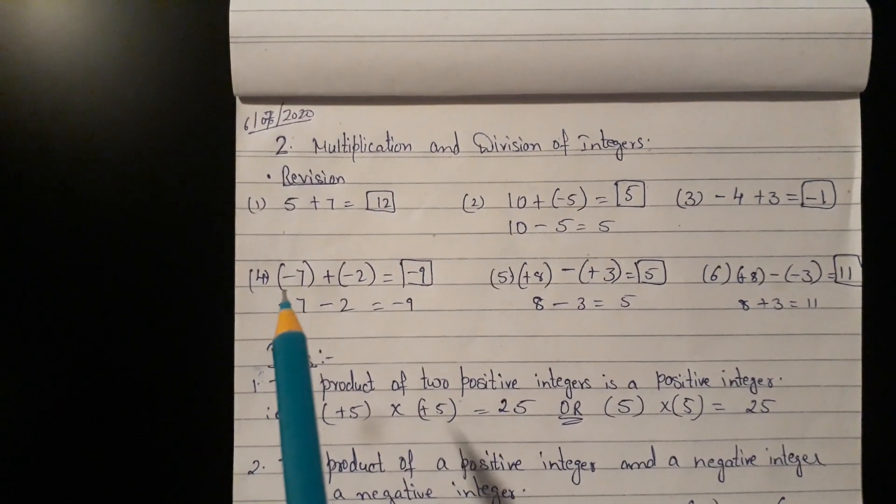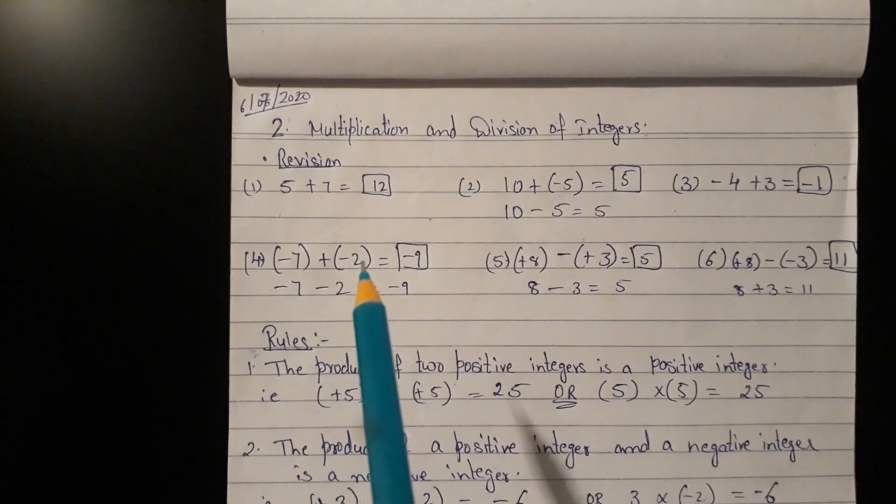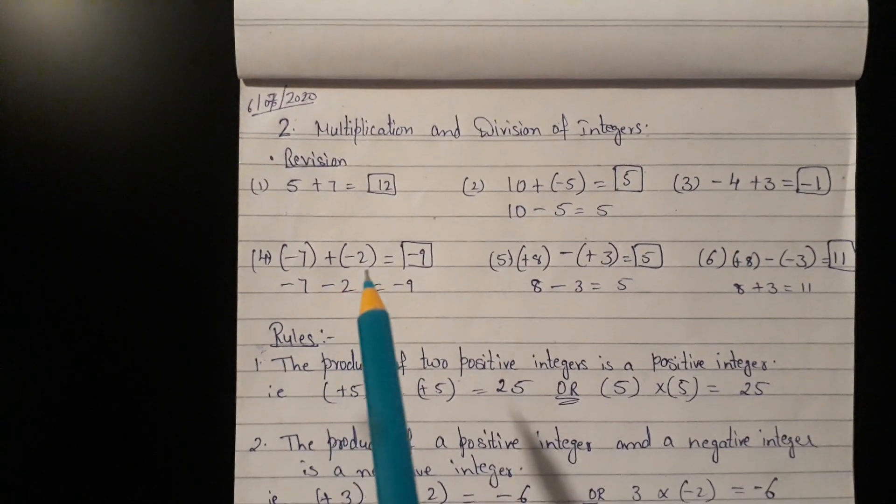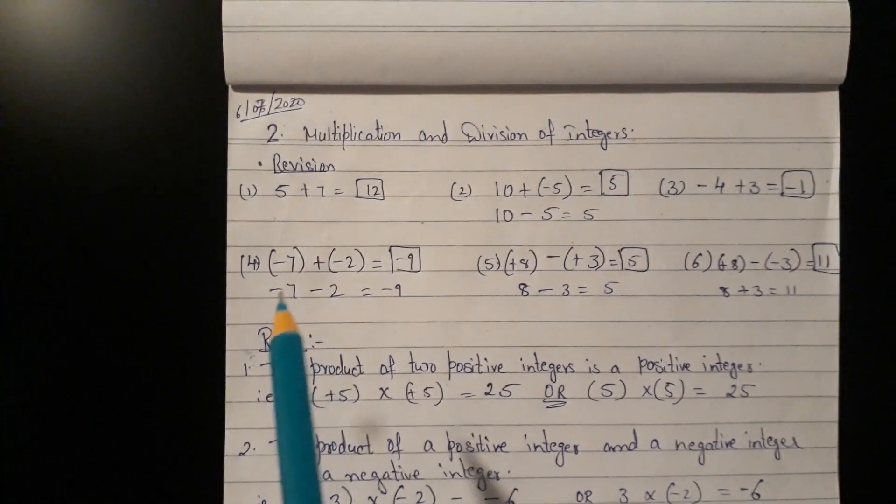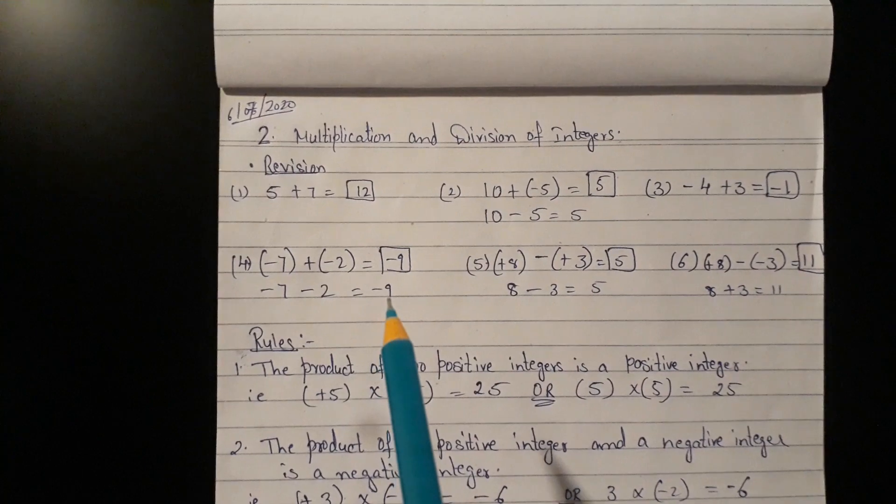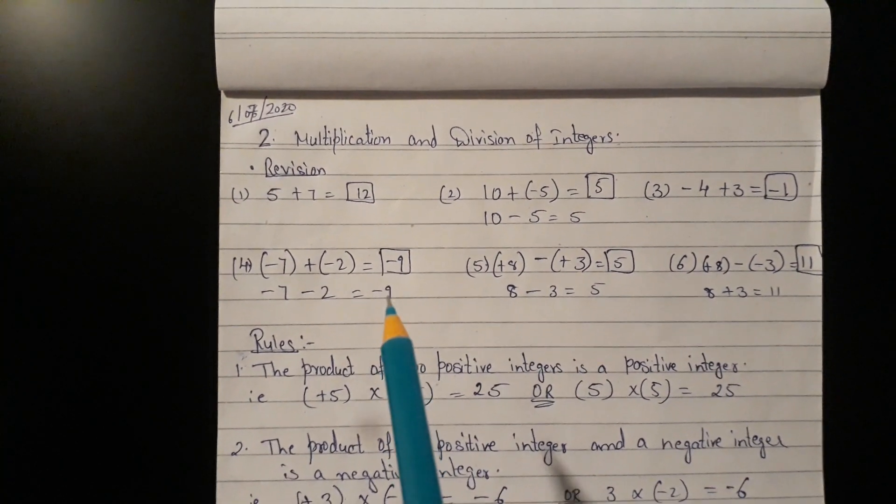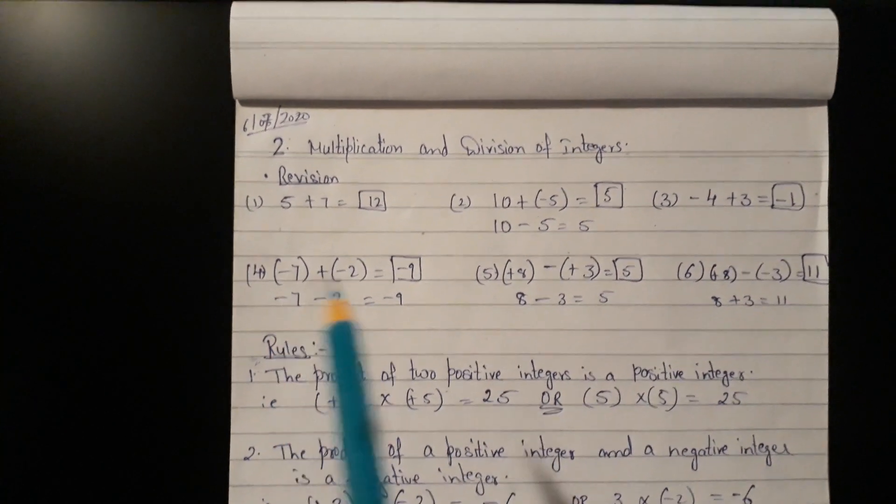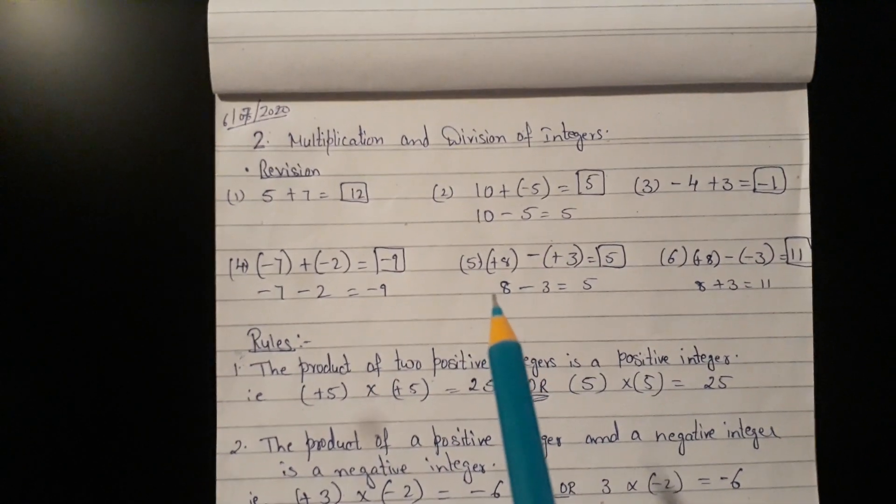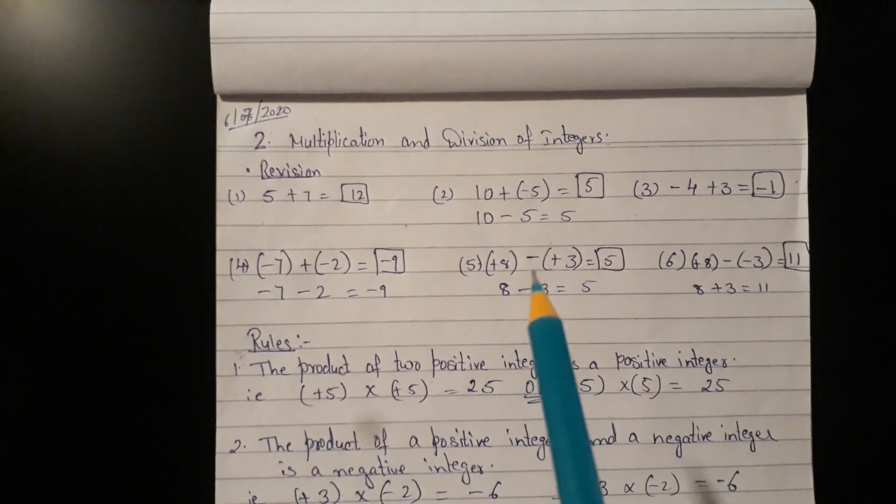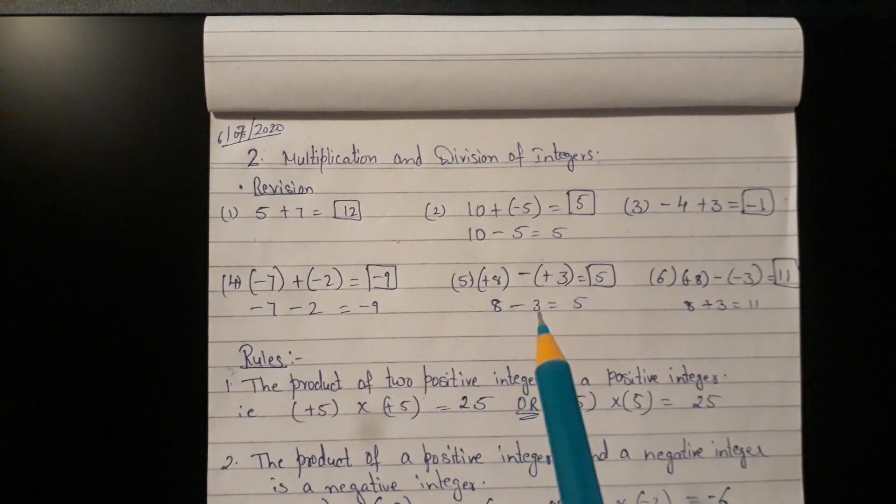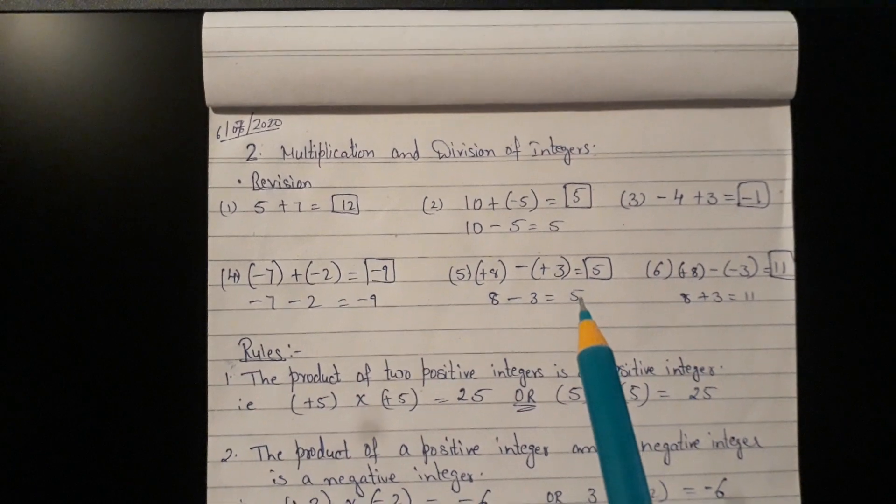Fourth one, minus 7 plus bracket minus 2. Open the bracket. Minus 7 plus into minus will give you minus. So minus 7 minus 2, actually it is addition. So 7 plus 2 gives us 9 and sign of the greater number that is 7. So it has minus sign. Fifth one, plus 8 minus bracket plus 3. So open the bracket. That gives us 8 minus 3. That means answer 5.